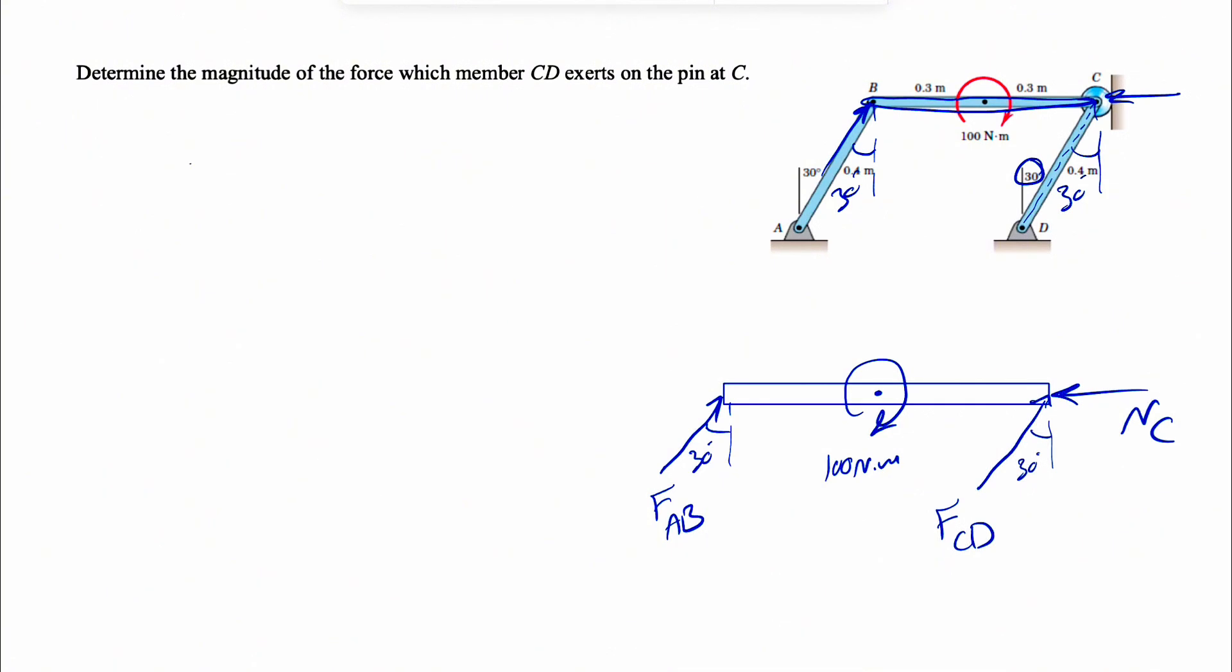The question is asking for FCD. We can use our equilibrium equations. Since we are interested in FCD, if we start with finding the moment about point B, counterclockwise positive is always our assumption. We can see that NC won't make any moment because it passes through that point. If we call our X and Y in this direction and resolve FCD into two components, this will be the X component and this will be the Y component. The X component is going to pass through point B, so no moment from that one.